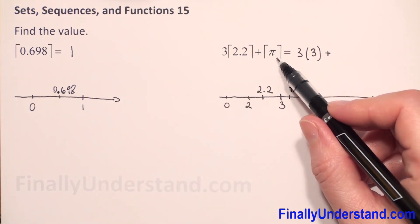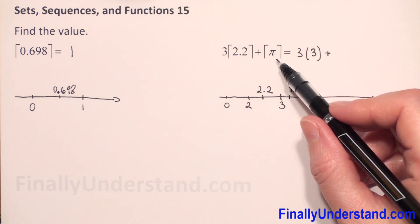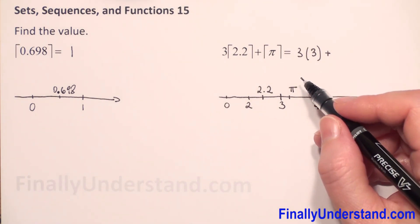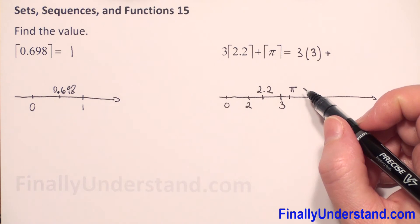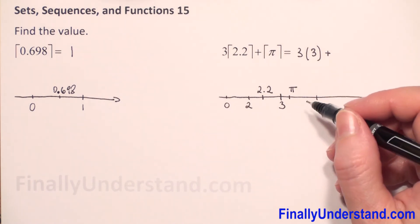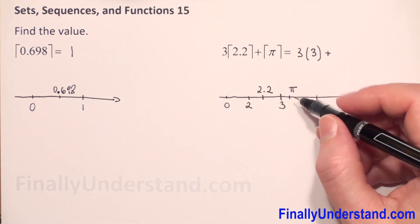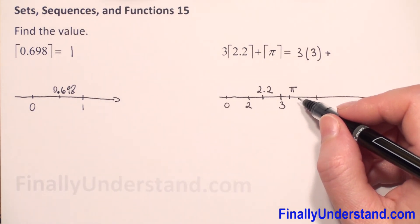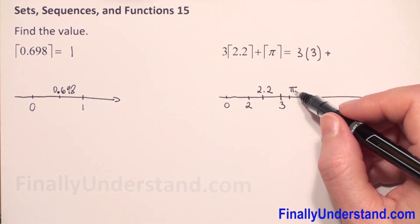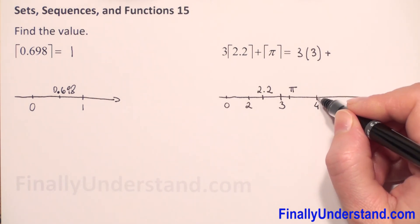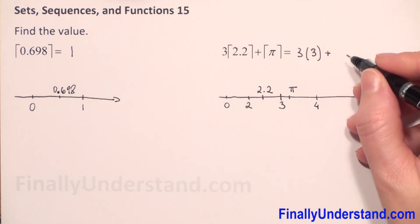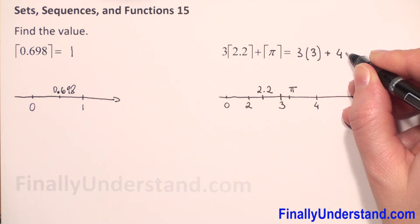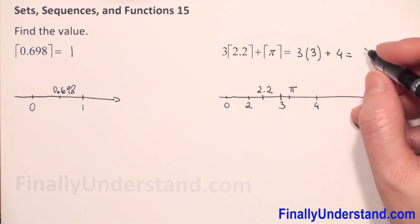Because π is not integer, because it is 3.14. And we know that integers are whole numbers including 0 and negative values. So, the smallest integer at least as big as π is 4. So, we have plus 4. So, this is equal 3 times 3 is 9 plus 4 is 13. This is my solution.